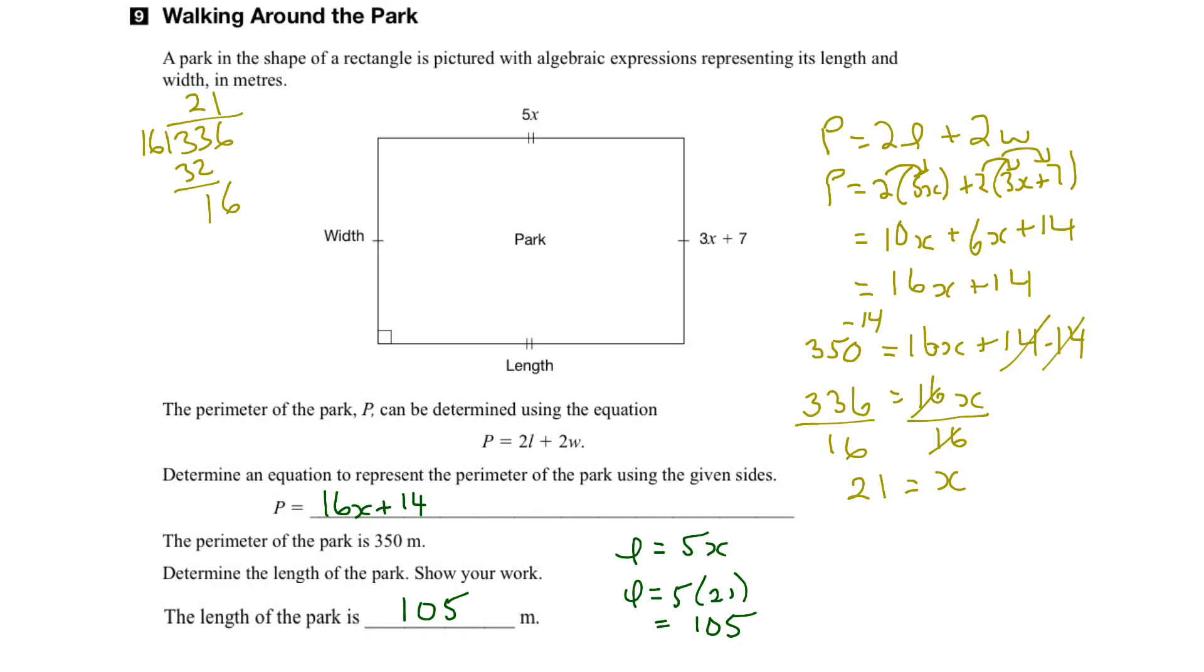Now we could stop there, but what we should probably do is verify that we have the right answer. For example, we know also that if the length is 5x, we know that the width is equal to 3x plus 7.